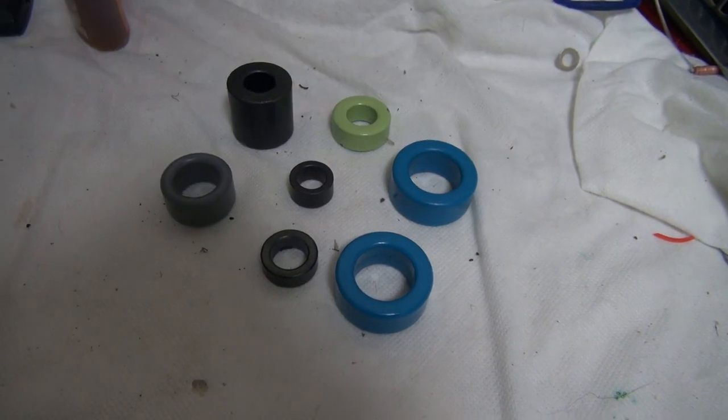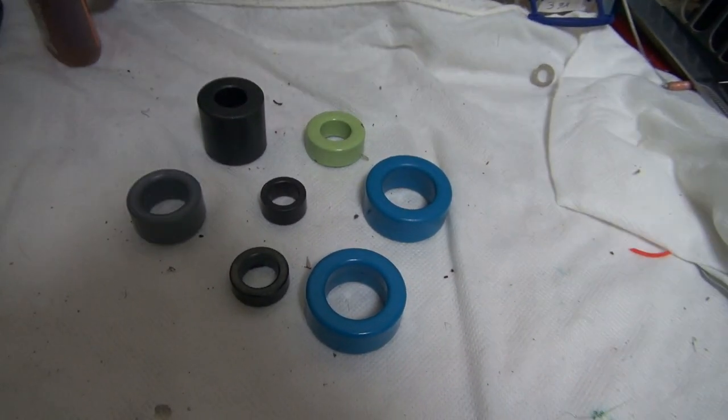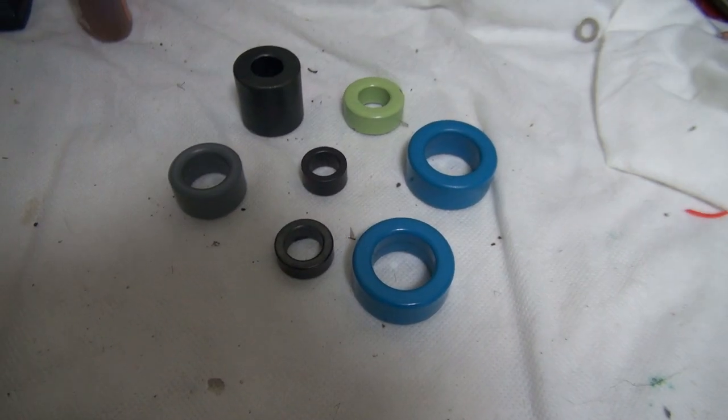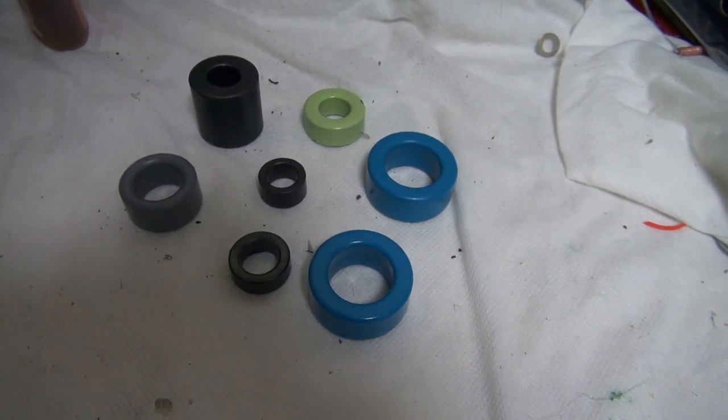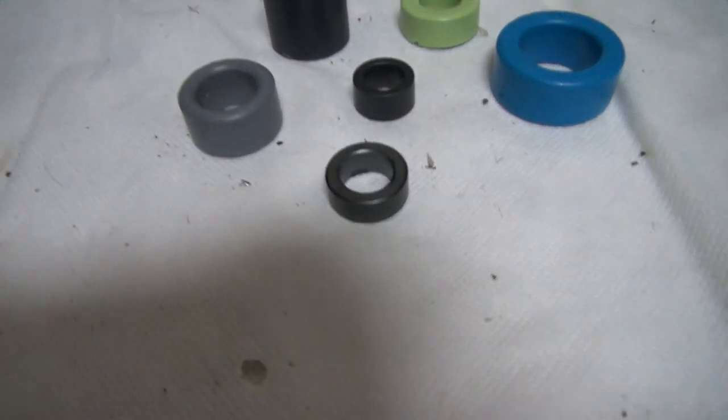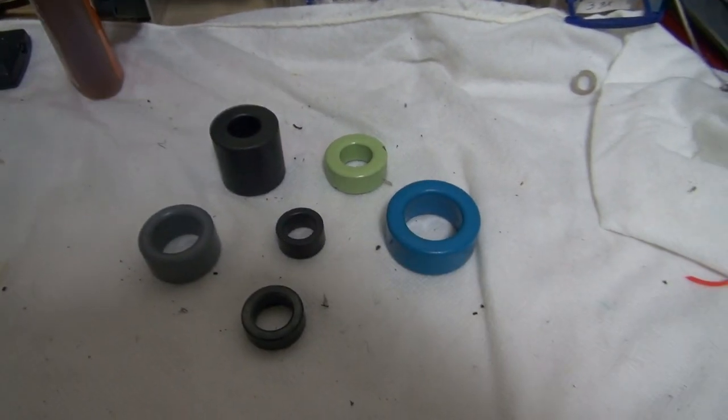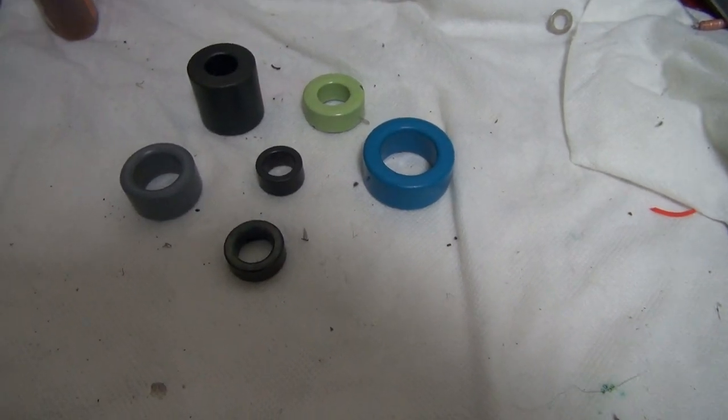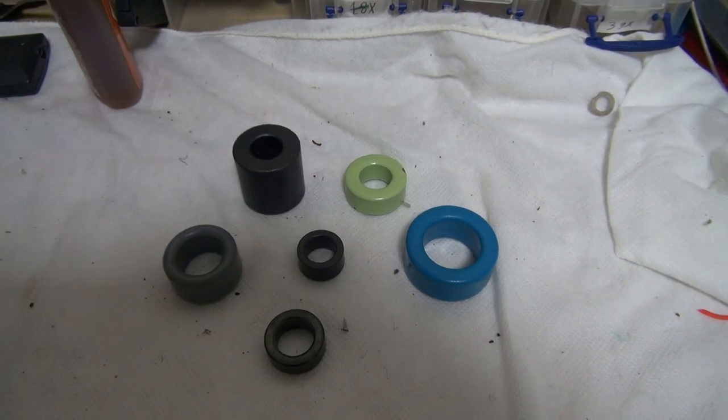So, the first thing I want to talk about is what kind of core you want to use. As you can see here, there are six cores. Well, there would be if this one wasn't here. There you go. Now, you could rip these out of old circuit boards and junked electronics and stuff like that. Or you could buy them.